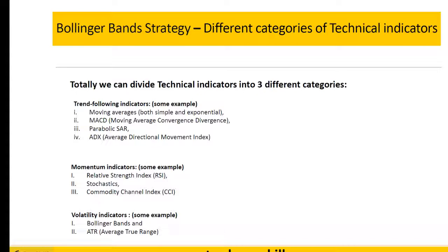For general information about technical indicators, we have three different categories. The first is trend-following indicators like Moving Average, MACD, SAR, and ADX. The second is momentum indicators like RSI, Stochastic, and CCI. The third is volatility indicators like Bollinger Bands and ATR, which is what we're going to talk about today.